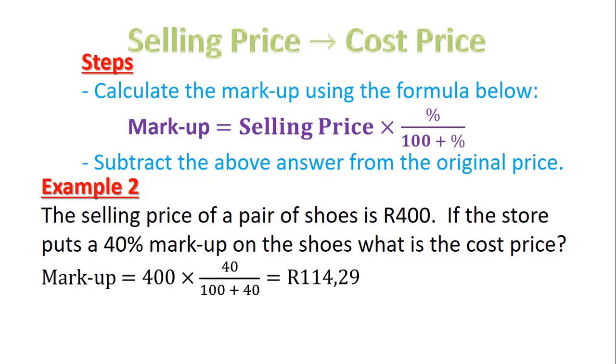But let's move on to the second step: subtract the above answer from the original price. Well, the original price was R400, then I have to subtract the markup that I've just worked out, which is R114 and 29 cents. That equals, and again I put it in my calculator and I press equals, and I get R285 and 71 cents. And so that was the original cost price of that pair of shoes.